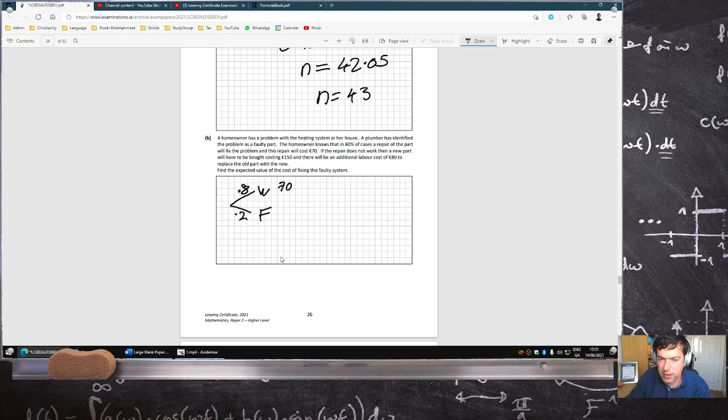If the repair does not work then a new part will have to be bought costing 150 euros, and there will be an additional 80 euros. Find the expected value. So it's just 0.8 times 70 plus 0.2 times that. 102 euros.